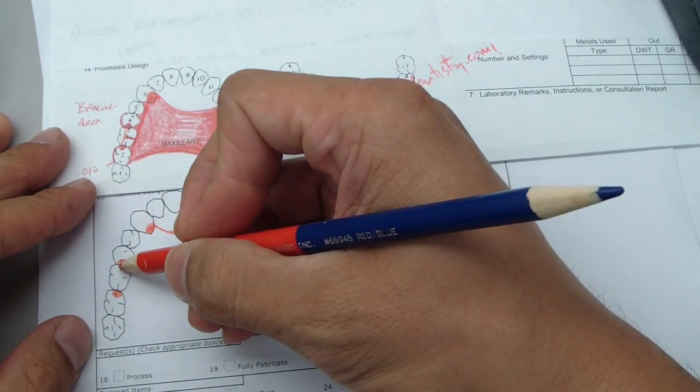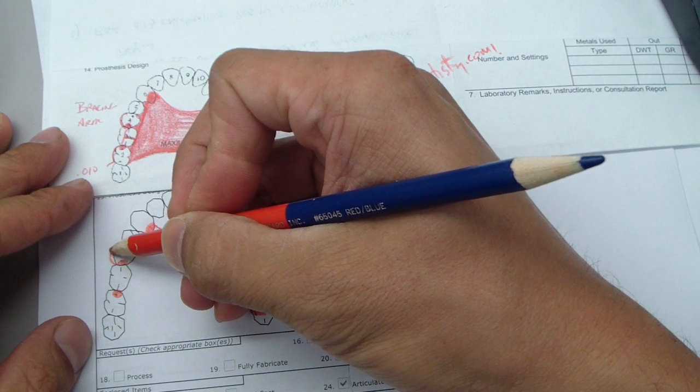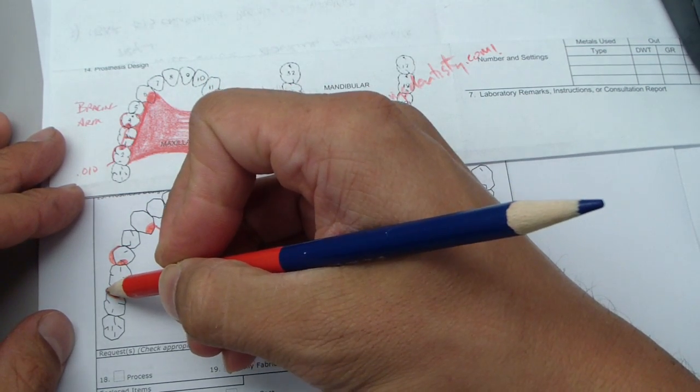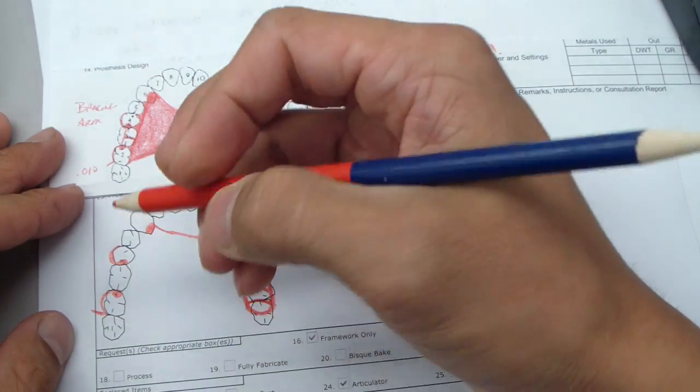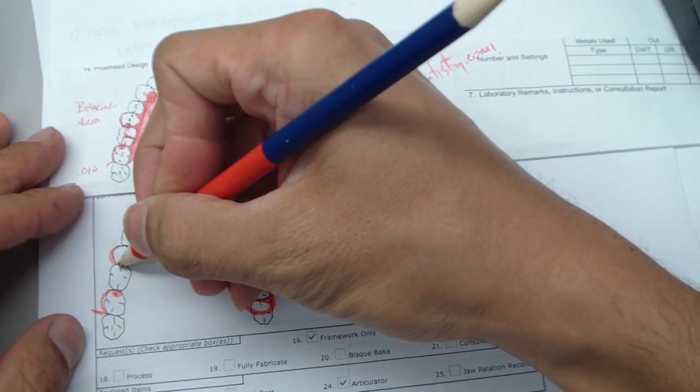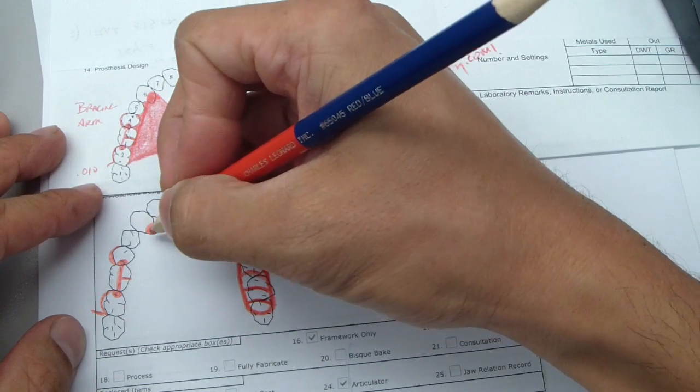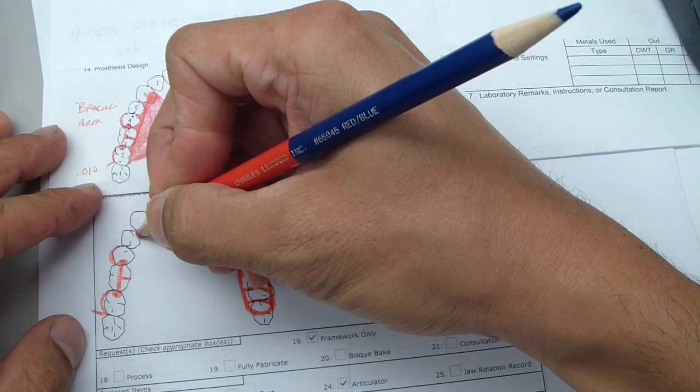And this is going to engage an 0.01 undercut. And then this is a bracing arm - there's no undercut here. And then we have a distal buccal undercut here. And then we join these two because we want a denture tooth there. Some framework, and we're just going to plate all of these.